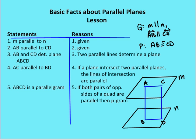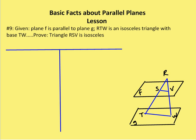Moving on to the next problem. This is problem number 9 in your book. I'm given that plane F is parallel to plane G — the two shapes that look like rhombuses or at least parallelograms. Plane F is parallel to plane G, and triangle RTW is an isosceles triangle with base TW. I want to prove that triangle RSV is isosceles.